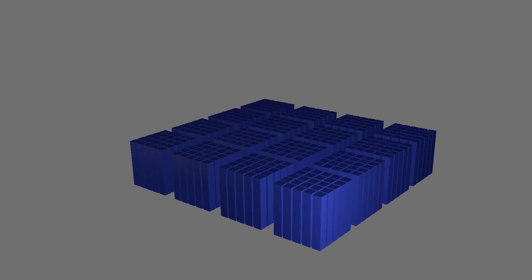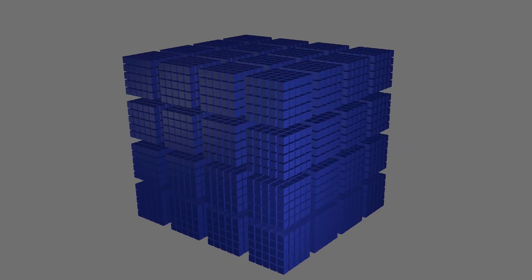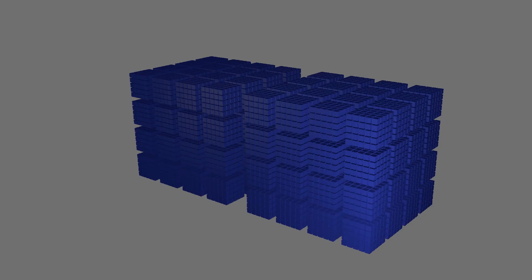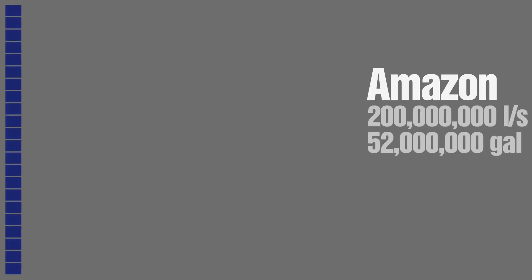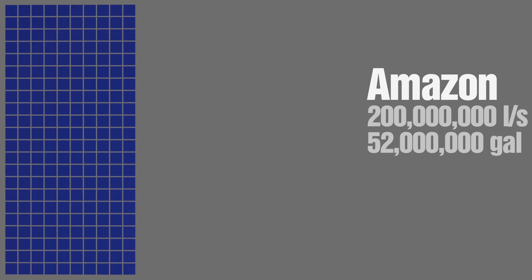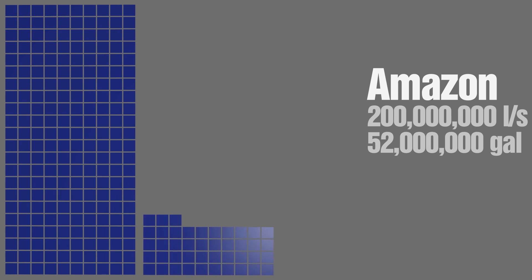Of course, comparing Amazon River's flow rate to the flow rate of an average tap is just like comparing the height of the Eiffel Tower to the height of an ant. But that's okay, because compared to the other big rivers, Amazon River is huge. Here it is compared to the Congo River, the second biggest river in the world.